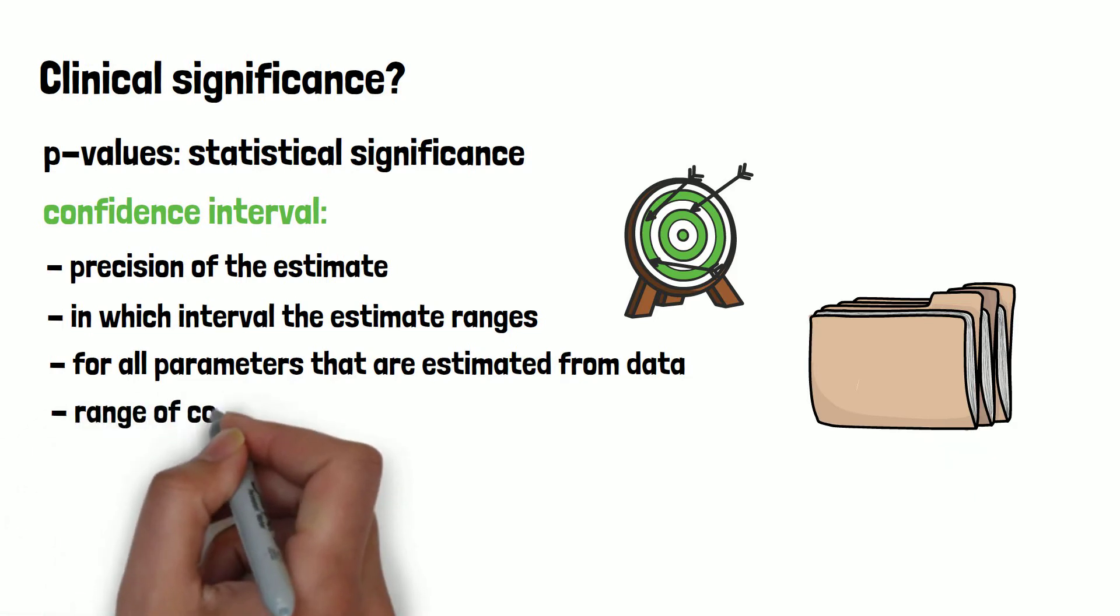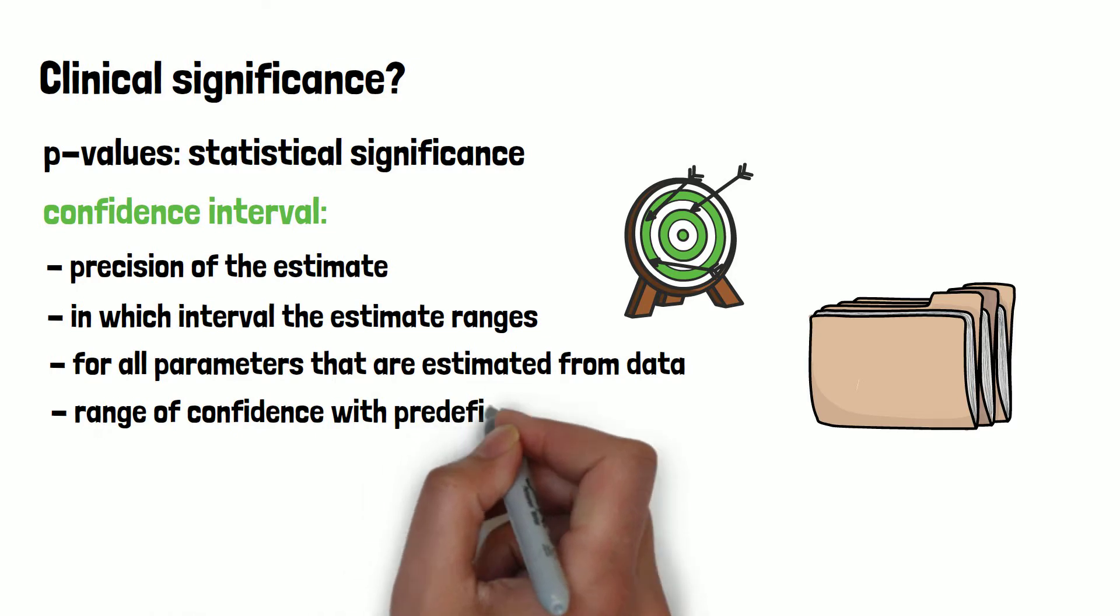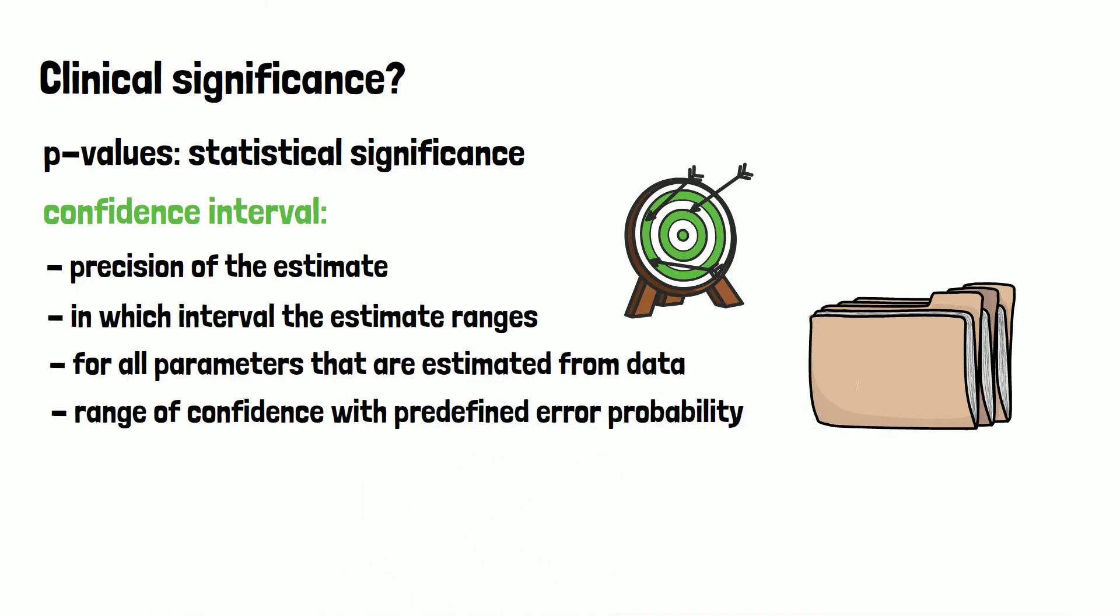It is a range of confidence with a certain predefined error probability, a measure of the precision of an estimate.